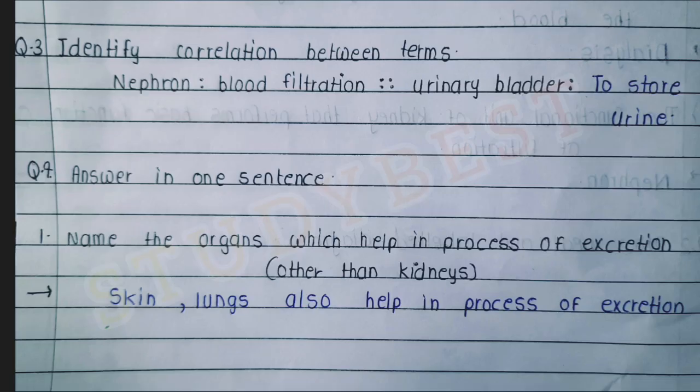Question three: identify the correlation between terms. Nephron is to blood filtration as urinary bladder is to store urine.